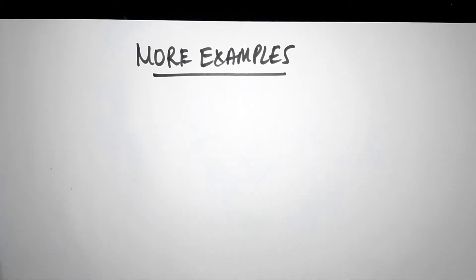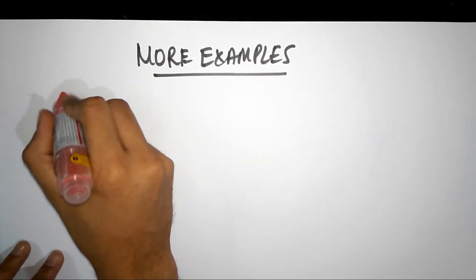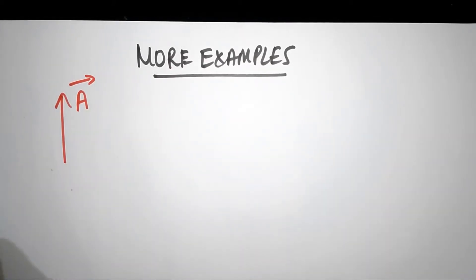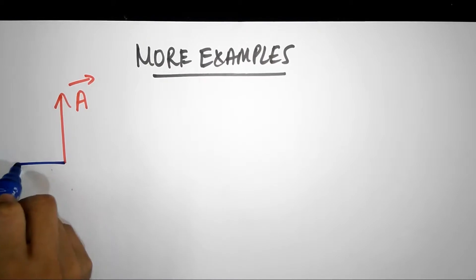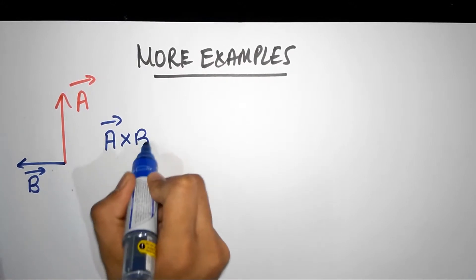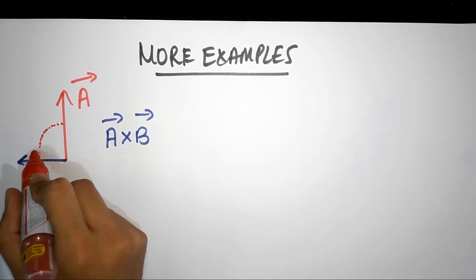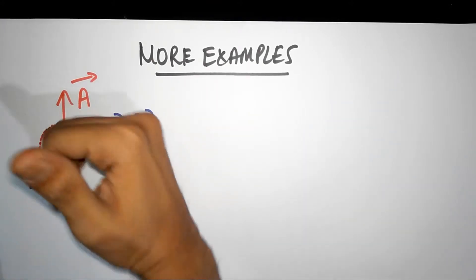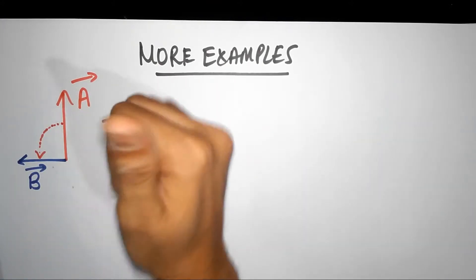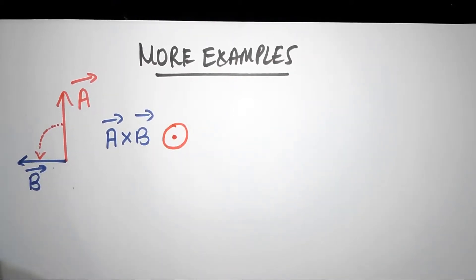In these examples, we will concentrate on getting the direction of A cross B. Imagine vector A is in this direction and vector B is directed this way. Can you tell me what is the direction of A cross B — that is the direction of n-cap? A cross B is just the rotation, so it wants to rotate this way. The rotation is clockwise, and therefore the thumb points towards you, hence A cross B is out of the book.